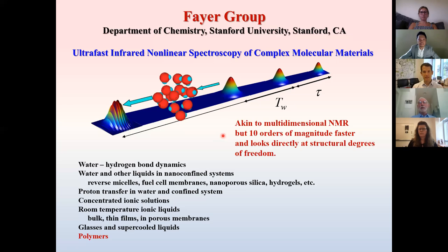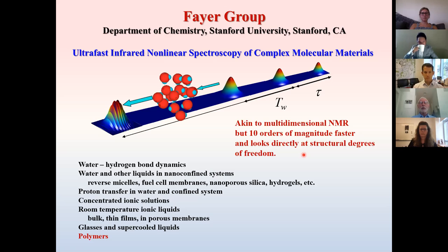I'm going to start by showing you a little bit of what we do. We are a group that for a long time has been developing and applying complicated optical methods — akin to multi-dimensional NMR, but ten orders of magnitude faster — and look directly at structural degrees of freedom. We use sequences of very short pulses. We started working in the visible, but we found that the infrared is extremely interesting because infrared looks at vibrations, which are the mechanical degrees of freedom of any kind of molecule or molecular system, very useful for understanding motions, interactions, and structures.